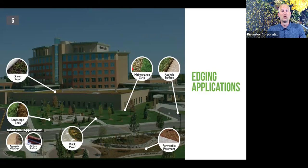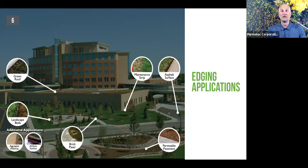This image shows one single project that has six different applications on it — from the roof to the building's edge, to the landscape, walkways, and driveways. We're going to look at each of these six applications separately, and also cover two additional popular applications not shown in this picture. Each of these is a completely different type of edging.